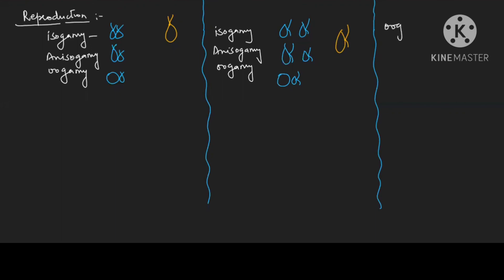In red algae, only oogamy. In red algae, the male gamete is non-motile and the female gamete is also present. Even the male gamete is non-motile, and this non-motile male gamete is known as spermatia. I hope this comparison will help you learn the algae topic very easily. In the next video we'll be discussing bryophytes. Thanks for watching.